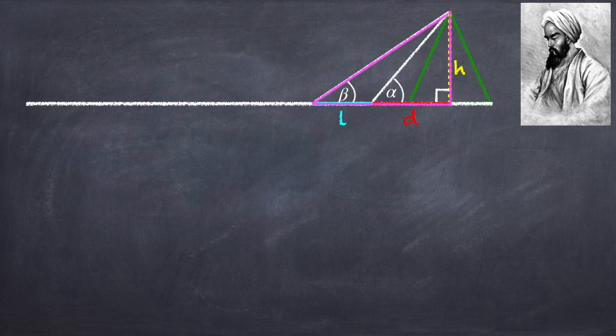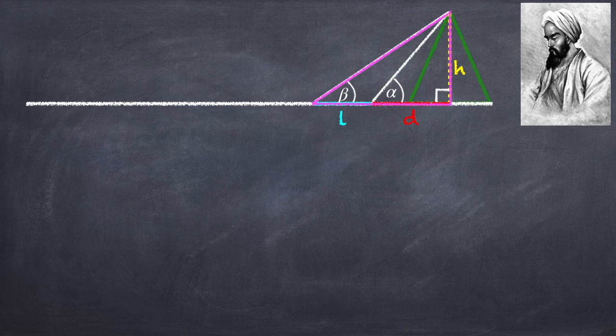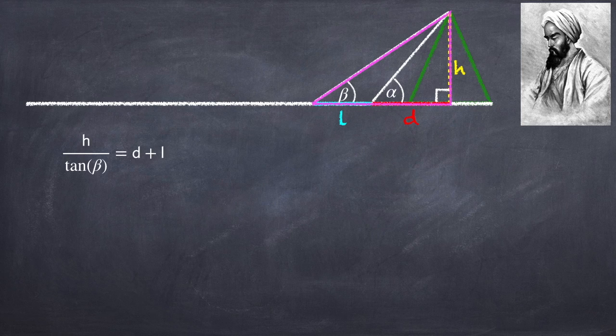So here we're going to have that the tangent of beta is h over l plus d, which I'm going to rewrite as h divided by tan beta equals d plus l.